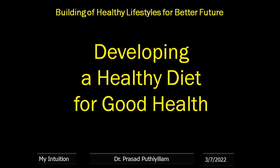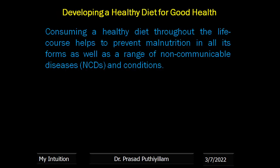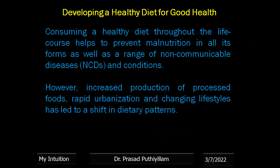The first topic is developing a healthy diet for good health. Consuming a healthy diet throughout the life course helps to prevent malnutrition in all its forms, as well as a range of non-communicable diseases and their conditions. However, the increased production of processed food, rapid urbanization and the changing lifestyle has led to a shift in dietary patterns.